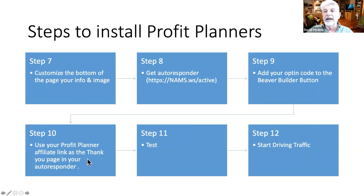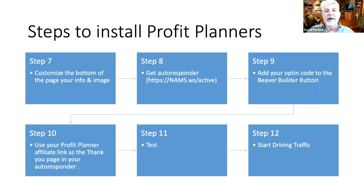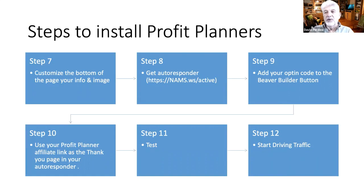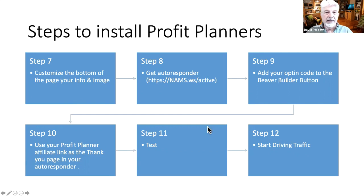Step ten: use your Profit Planner affiliate link as the thank-you page in your autoresponder — that's the most important thing, as your affiliate link drives into the autoresponder package. Step eleven: test that your button works and that you get credit for it — test the entire thing to make sure it's working. Step twelve: drive traffic. That's the 12 steps of installing these Profit Planners and making sure they are working for you.